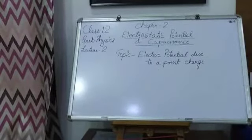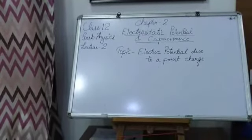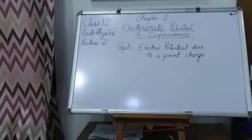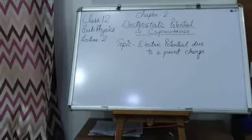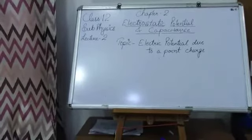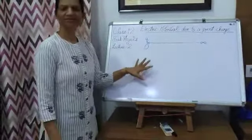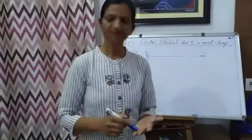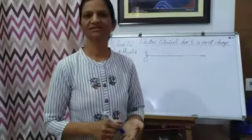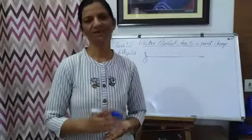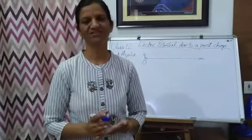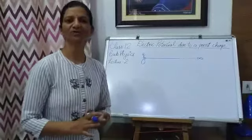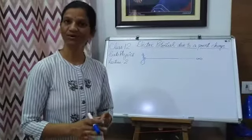Hello students, class 12, subject physics, chapter 2: electrostatic potential and capacitance. This is lecture 2 and the topic is electric potential due to a point charge. In the previous session I have already explained about electric potential at any point, which is defined as the amount of work done in bringing a unit positive test charge from infinity to a point.